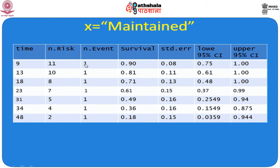If we add the number at risk (10) plus the number of events (1), we get the earlier row's value of 11. This provides the step functions for survival curves. Going from 13 to 18 months, one patient died and 8 patients were at risk at 18 months, because another patient's information was taken as a censored observation, as we saw in the earlier slides.